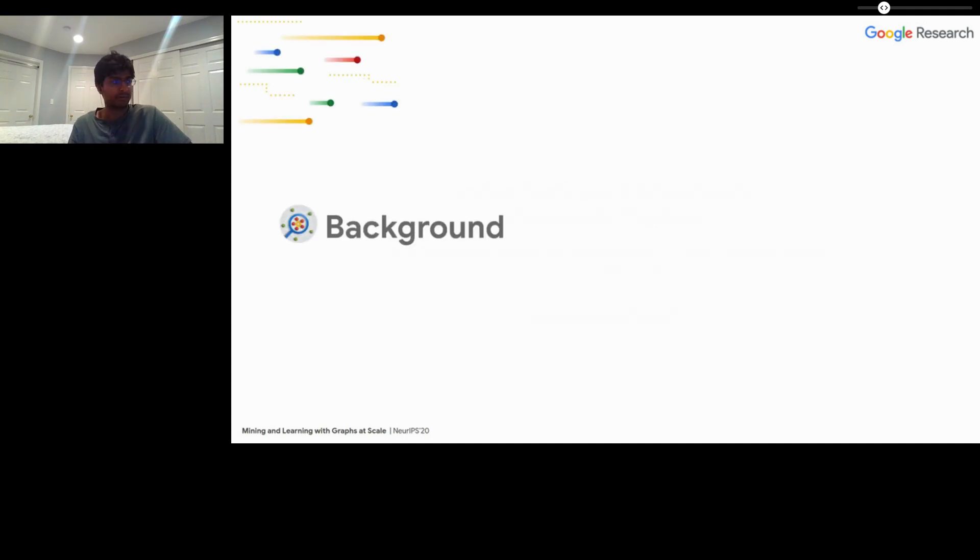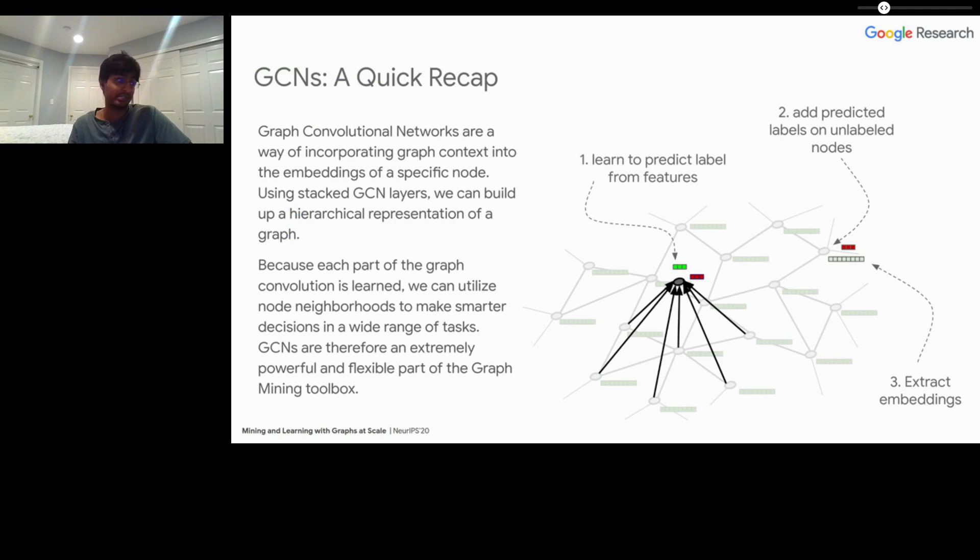Let's start with a little bit of background. First, a quick recap of what GCNs are. Graph convolutional networks are a way of incorporating graph context into the embeddings of a specific node. Using stacked GCN layers, we can build up a hierarchical representation of a graph the same way we might do with image pixels on a convolutional network. Because each part of the graph convolution is learned, we can utilize node neighborhoods to make smarter decisions in a pretty wide range of tasks, which ends up making GCNs a really flexible and powerful part of the graph mining toolbox. We use these things all across Google as a result.